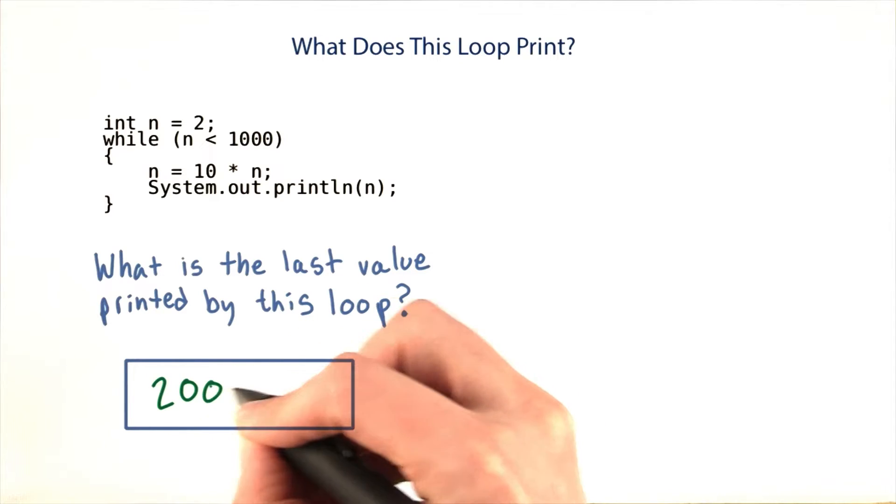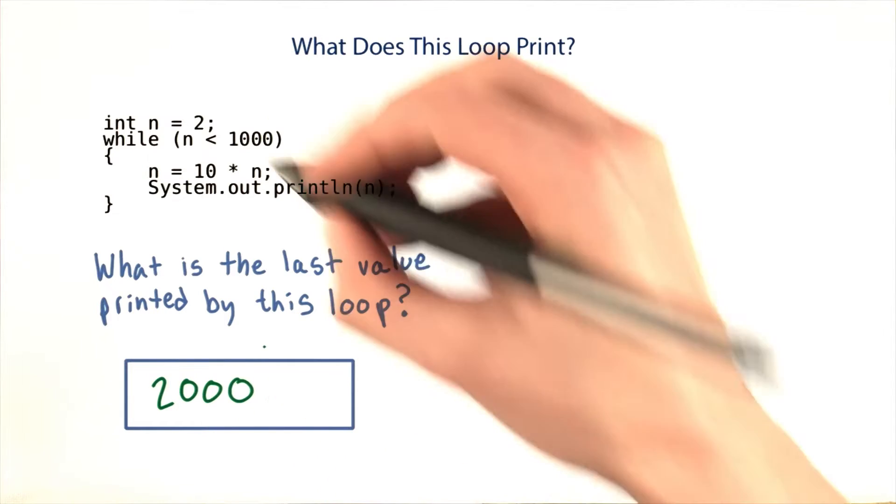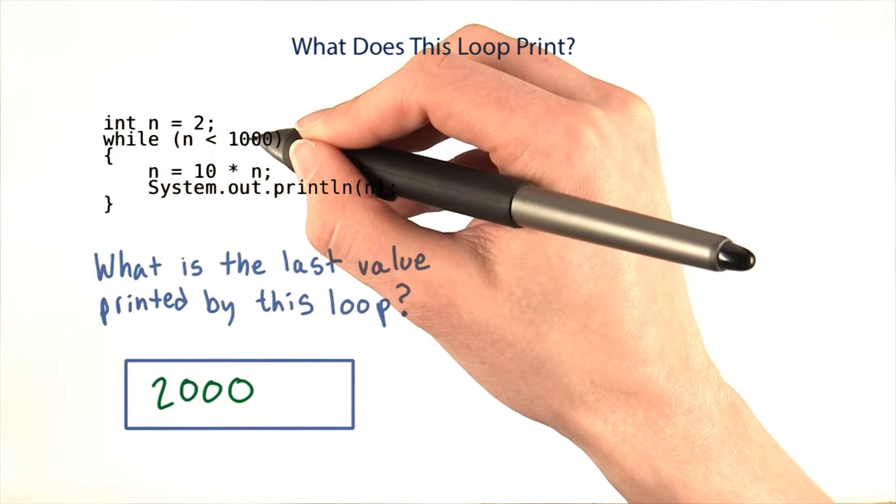The last value printed by this loop is 2,000. This is a little bit weird because the loop's condition says that it only runs as long as n is less than 1,000.